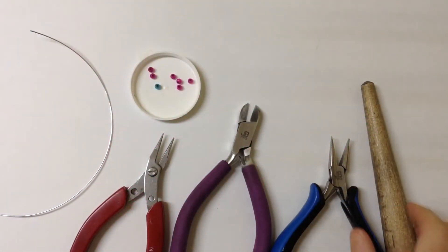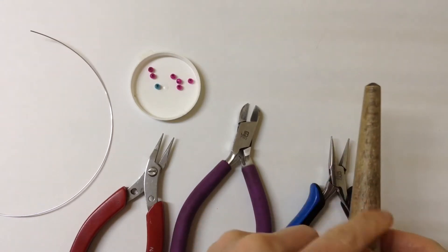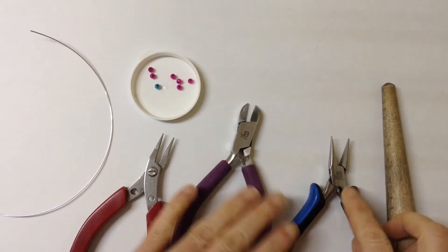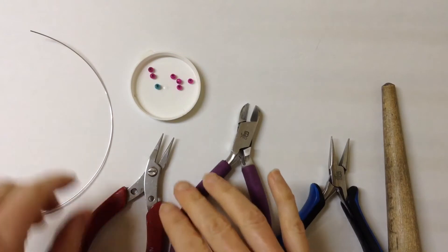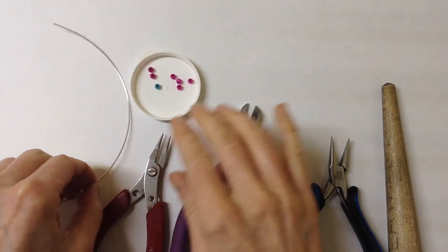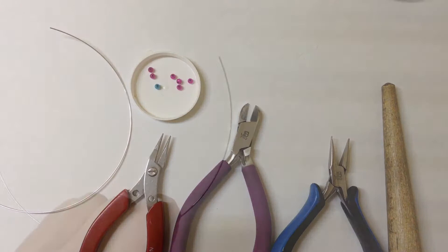To make the daisy ring you're going to need a ring form or a large marker, flat pliers, cutters, round pliers, 20 gauge wire and some four millimeter beads.